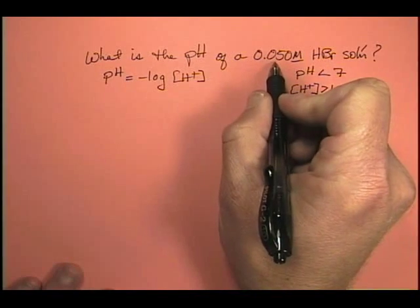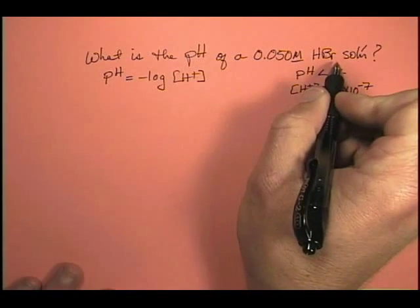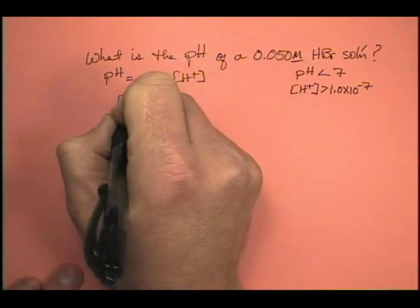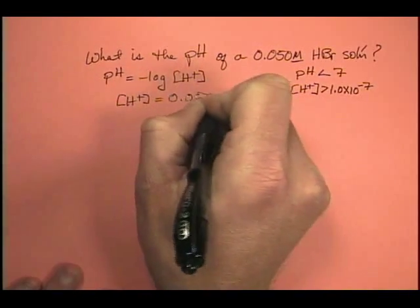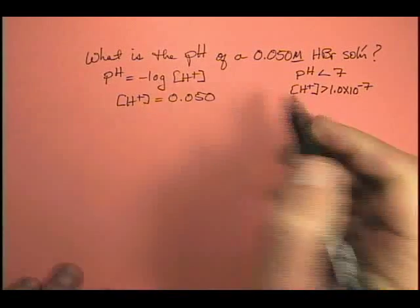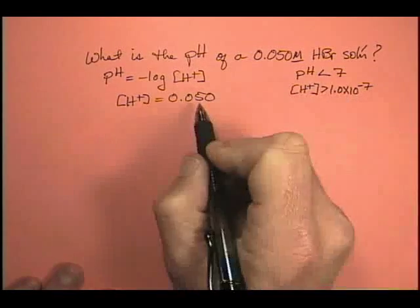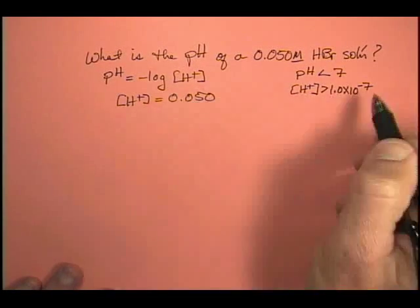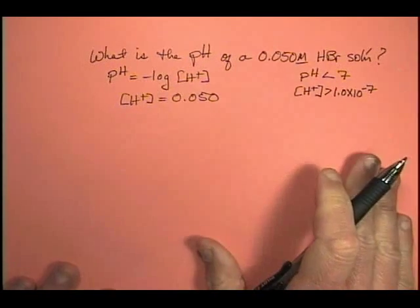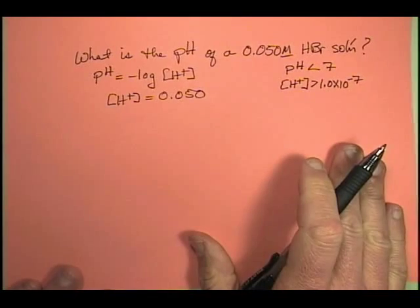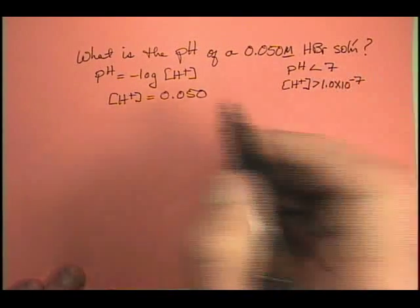So, in this case, if we have a 0.050 molar HBr solution, then we know that our hydrogen ion concentration is 0.050. How easy is that? Does it fit our criteria? Yeah. So, 5 times 10 to the minus 2 is much bigger than 10 to the minus 7. So, our hydrogen ion concentration is greater than the 1 times 10 to the minus 7, which is reasonable.